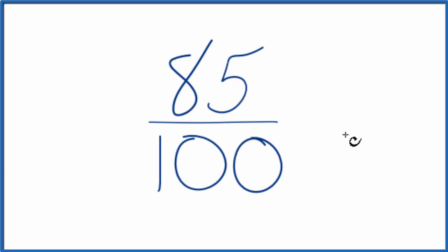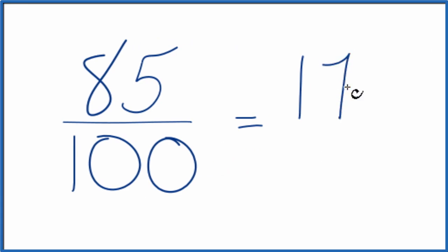Let's divide 85 by 5. That gives us 17. And if we divide 100 by 5, we get 20.